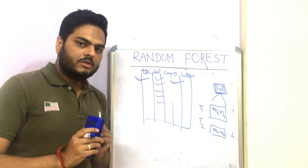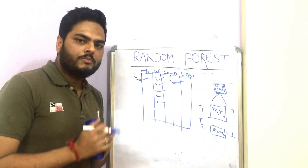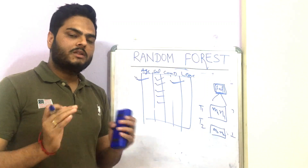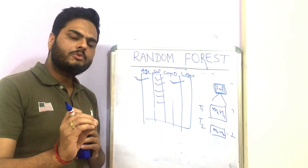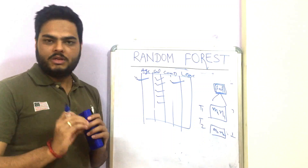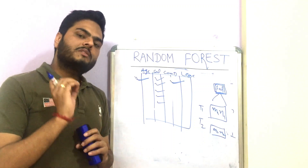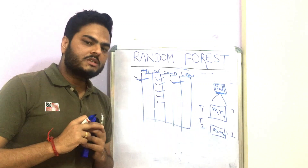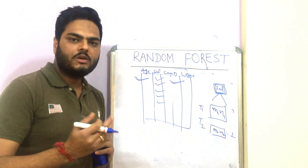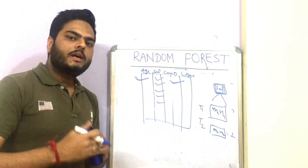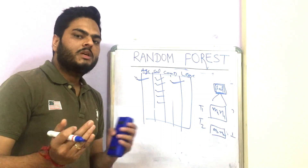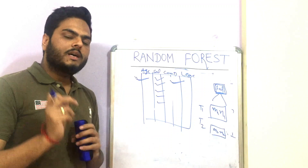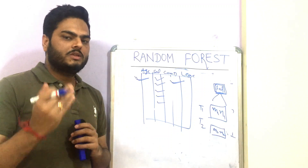Other advantages of random forest include that it is easy to implement — you just call random forest in Python or R and take care of hyperparameter tuning. You need to decide the optimal number of trees, the optimal number of rows (m) and columns (n), and other parameters like maximum depth of the tree.